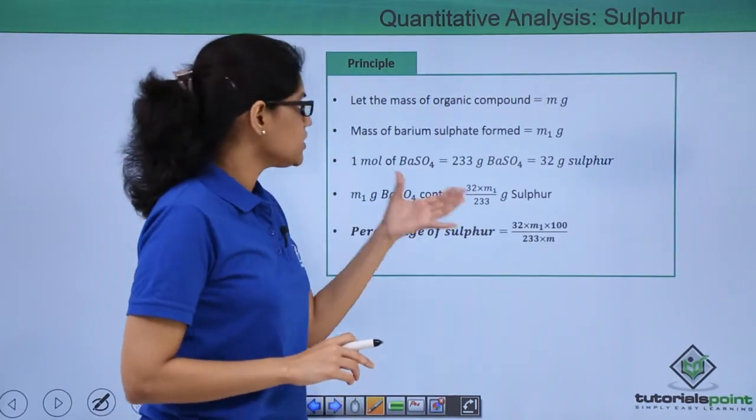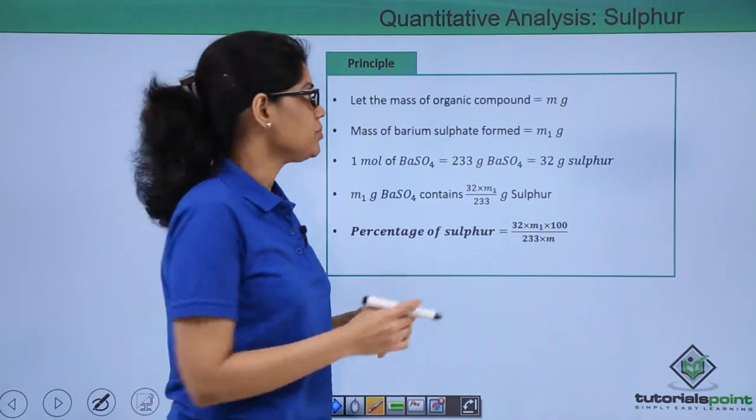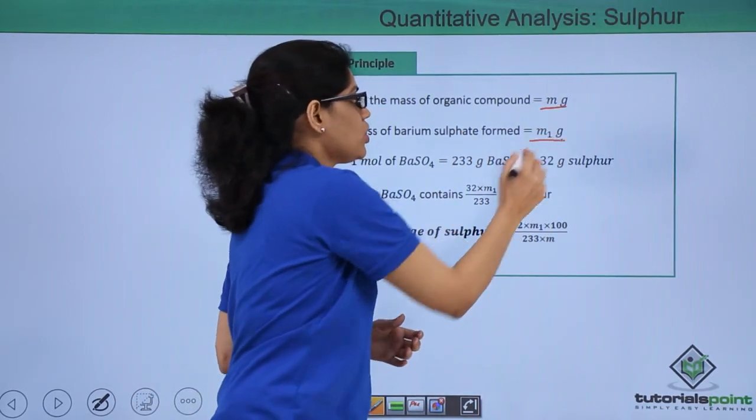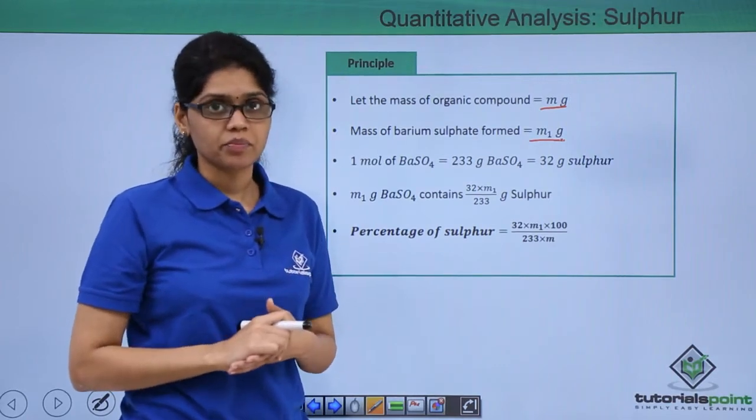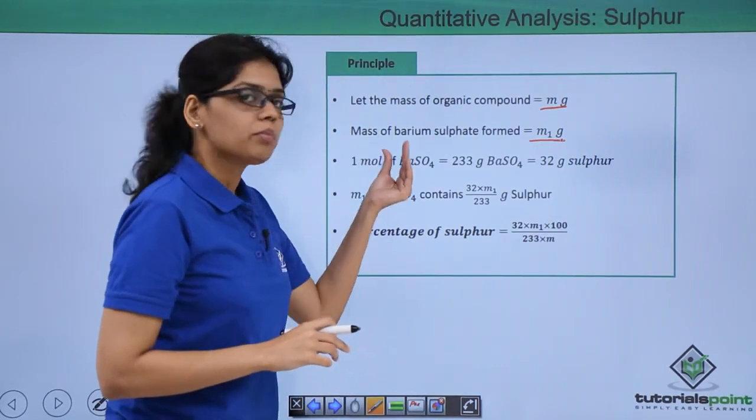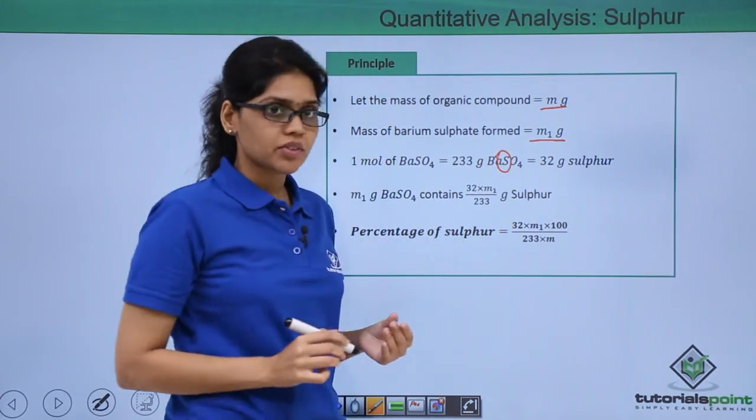So let's try to understand it here. Let the mass of the organic compound that we take be m g and the amount or the mass of barium sulphate that is formed in the reaction be m1 g. Now we know that 1 mol of barium sulphate is 233 g of barium sulphate contains 32 g of sulphur.